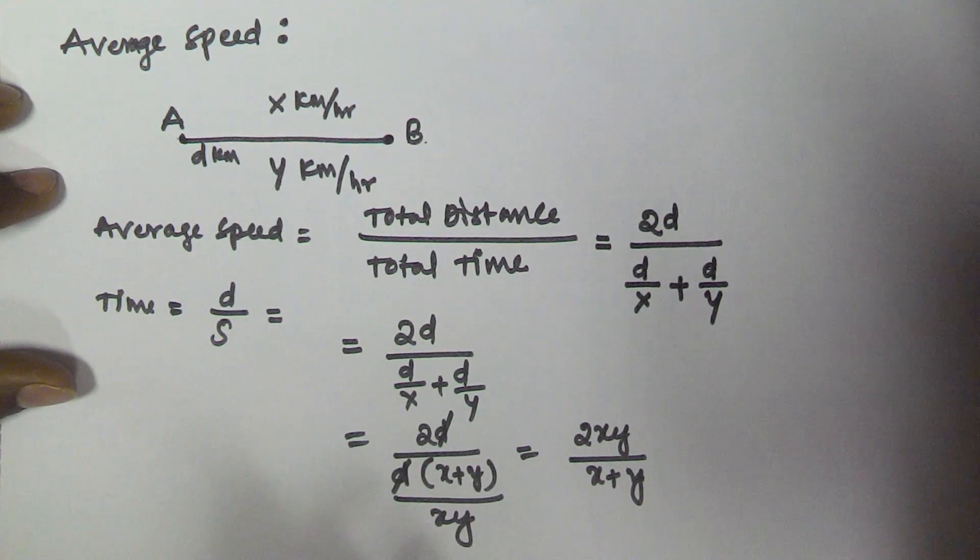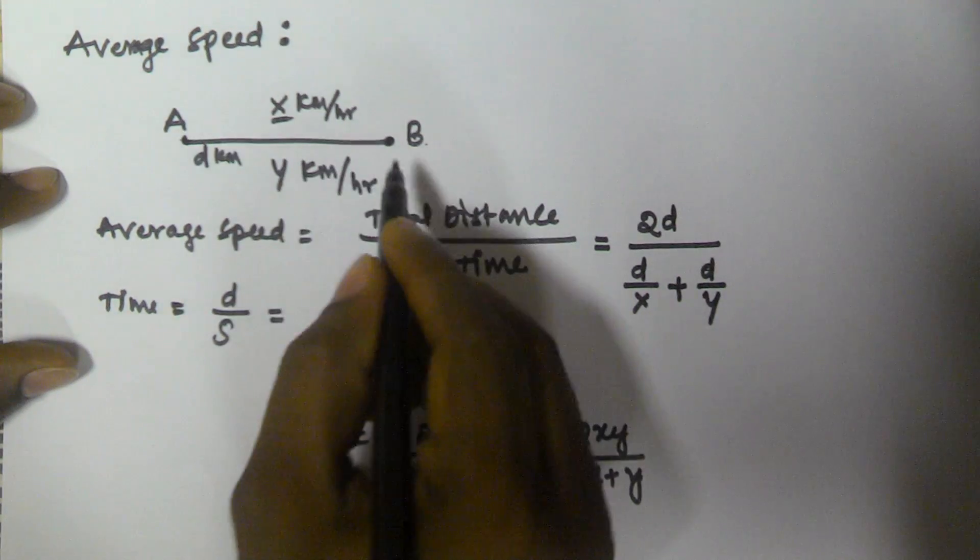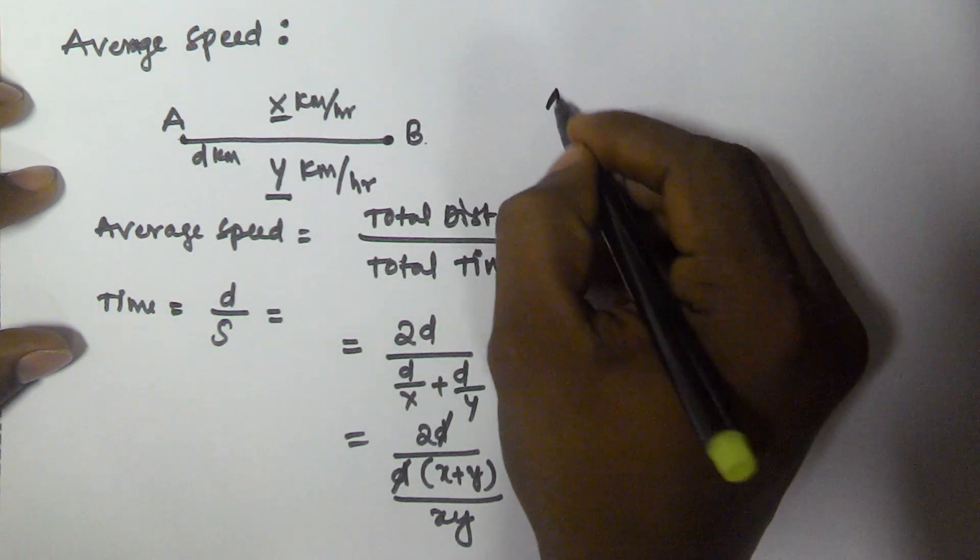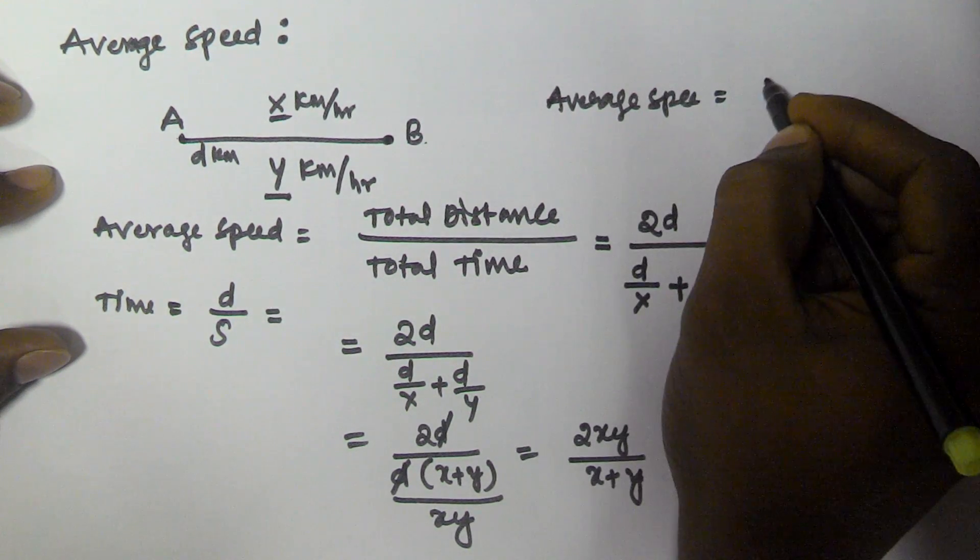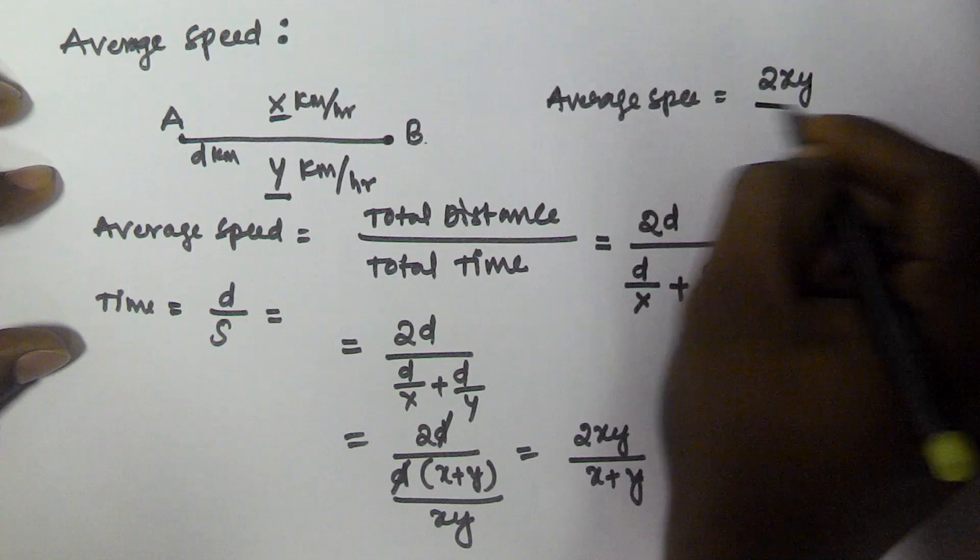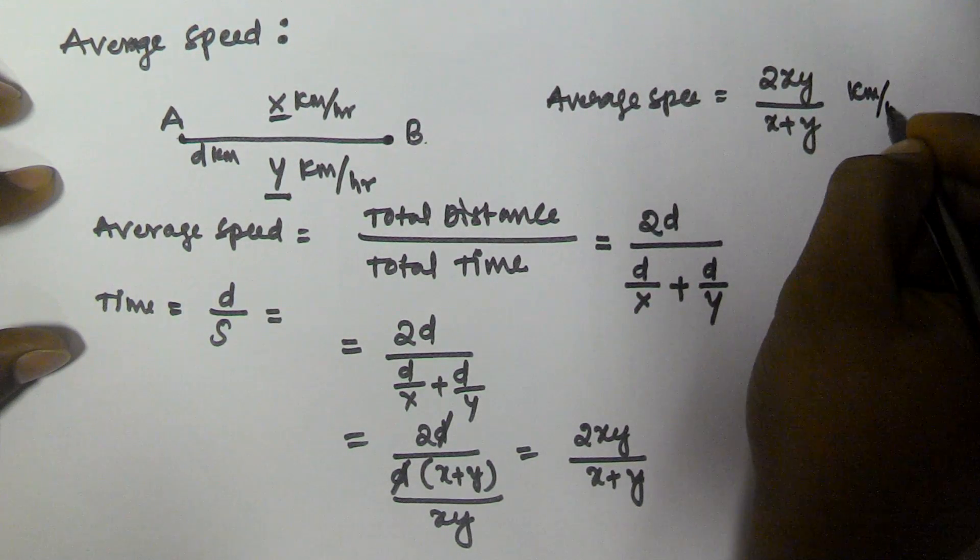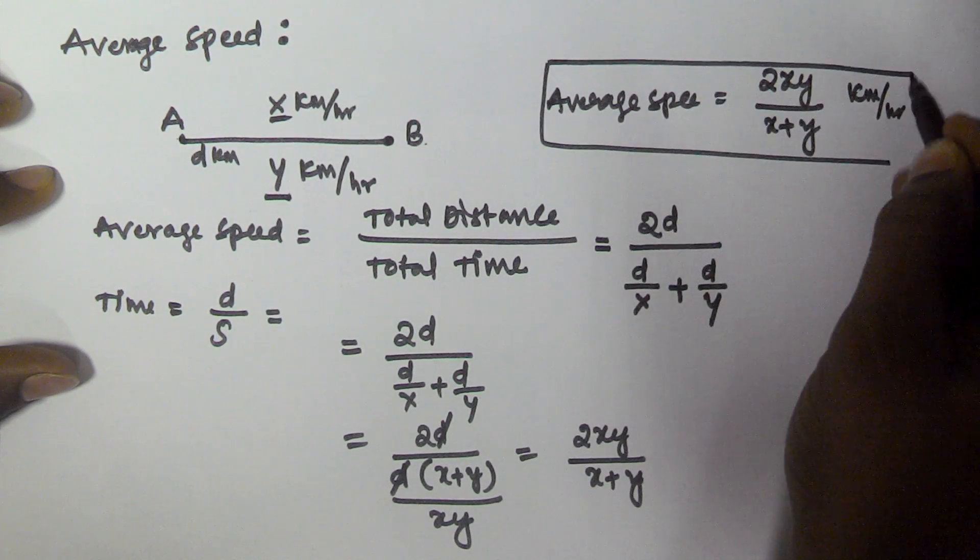So the average speed, if a person travels from A to B with x km per hour and B to A with y km per hour, then the average speed is equal to 2xy by x plus y km per hour.